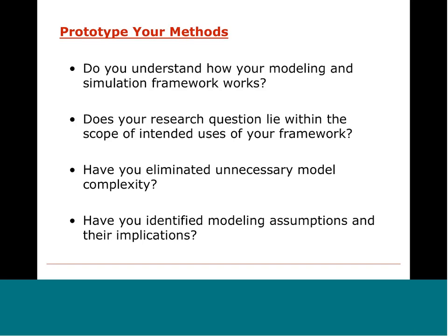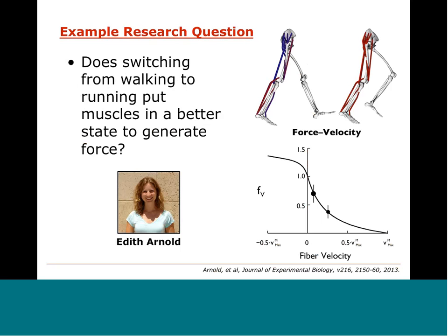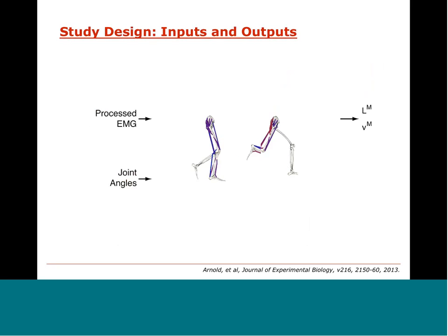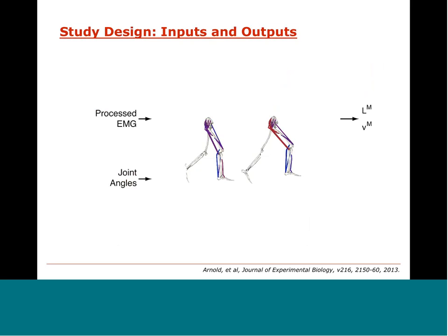Let's step through the process with a case study. This is work by Edith Arnold, a former graduate student in the lab at Stanford. Her question: does switching from walking to running put muscles in a better state to generate force? For example, do muscles like the plantar flexors operate at lower speeds if you switch from a fast walk to a slow run, and thus become better at generating force? The inputs to the simulation are EMG data and joint angles from motion capture, and the outputs are estimates of muscle length and velocity.